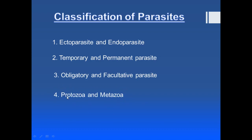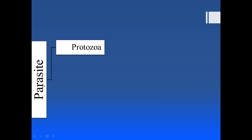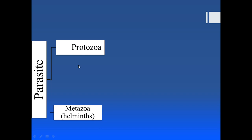The main classification we will use is protozoa and metazoa, based on cellularity. If the parasite is unicellular it is placed in the protozoa; if it is multicellular it is placed in the metazoa. Protozoa are further divided on the basis of locomotory organs into four classes — some have pseudopodia, some have cilia, and some have flagella.